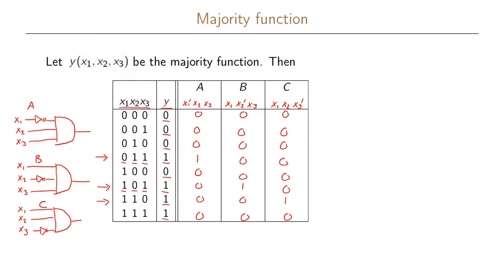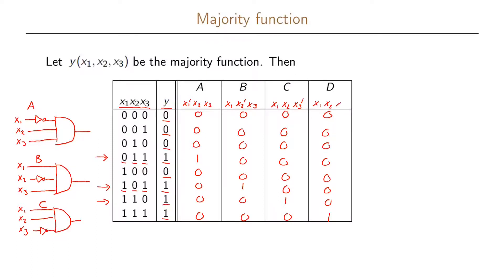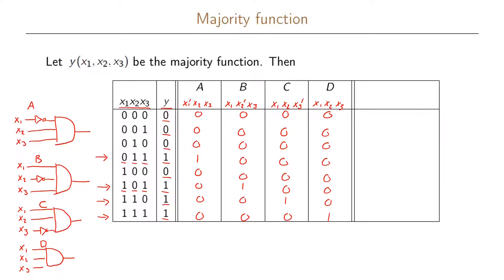For the last one in the truth table, we extract it in the same way by writing all other entries as zero. This function can be written as x1 x2 x3, where we have extracted the last one. Written as a circuit, inputs x1, x2, and x3 are none of them complemented, so the circuit is simply all three connected directly into an AND gate. This is part D.